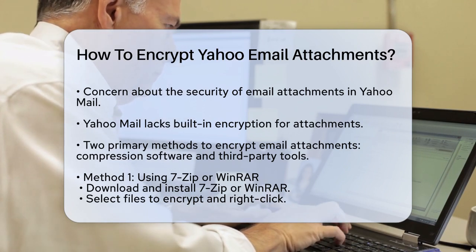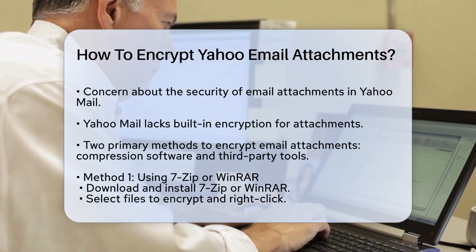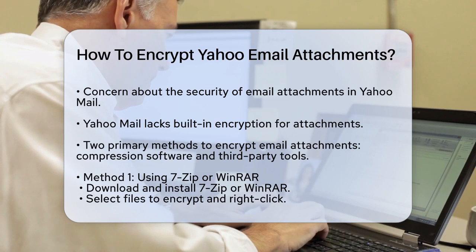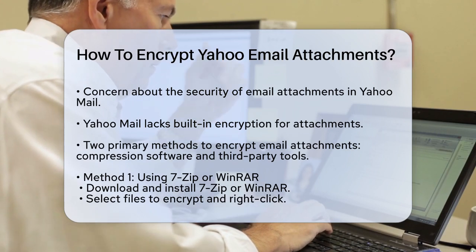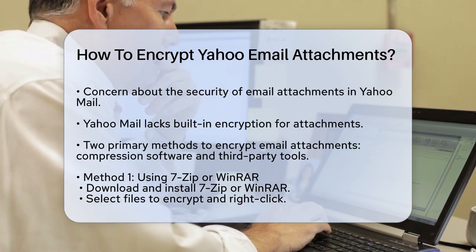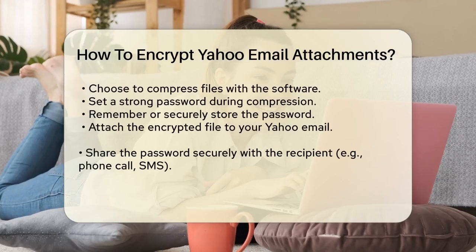One of the easiest ways to encrypt email attachments is by using compression software like 7-Zip or WinRAR. Here's how you can do it. Download and install 7-Zip or WinRAR on your computer — both are user-friendly and widely available.